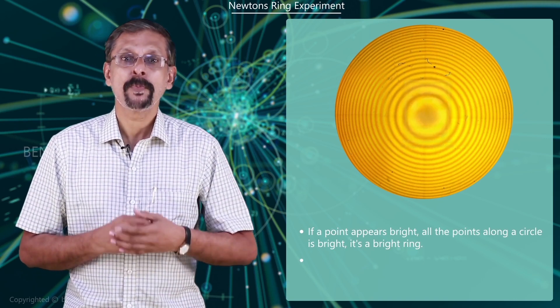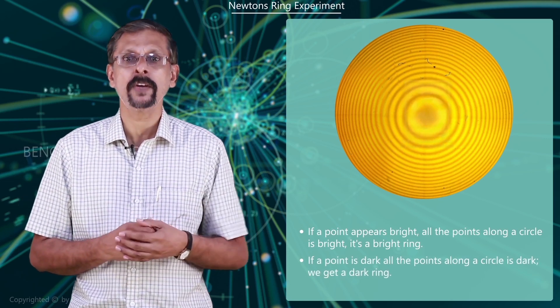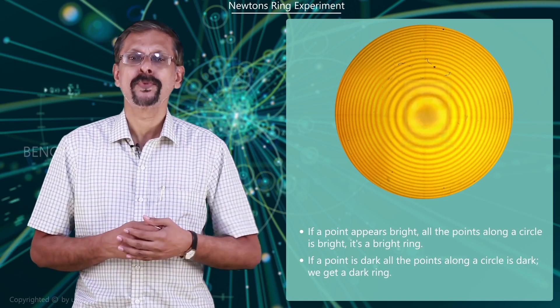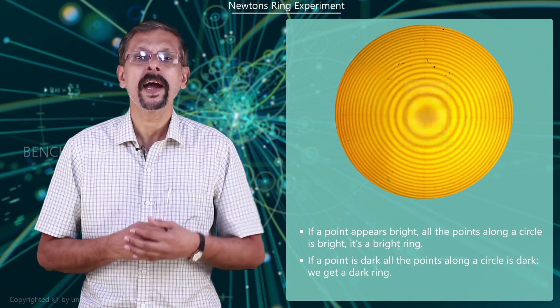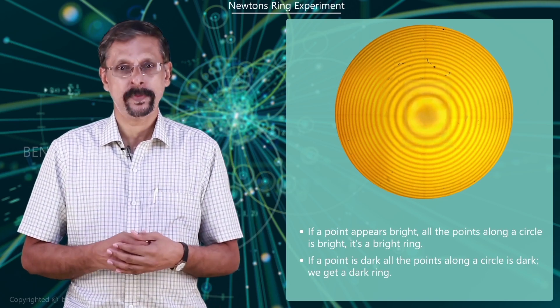Similarly, if a point is dark, along a circle the thickness is the same and we get a dark ring. The result is a pattern of concentric dark and bright rings. This is what is known as Newton's rings pattern.